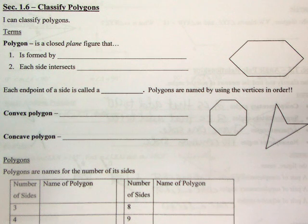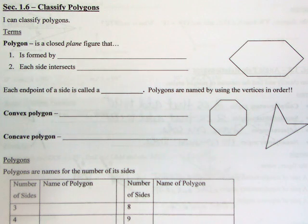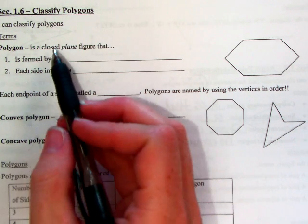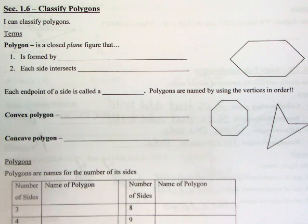This is section 1.6 and we're going to be talking about classifying polygons. It's a little bit of a departure from all the angle stuff and segment stuff we've been doing, but it covers a lot of the basic vocab that we're going to be using in the rest of the book. So by the end of this section you should be able to classify polygons — name them, identify them, talk about them.